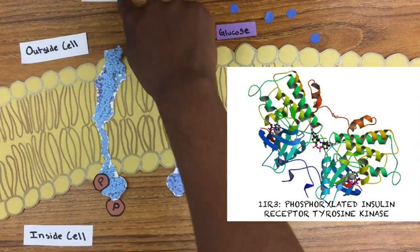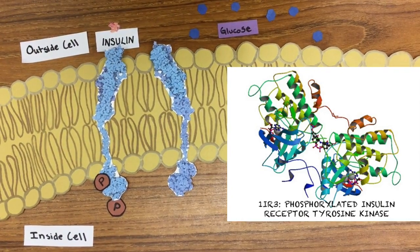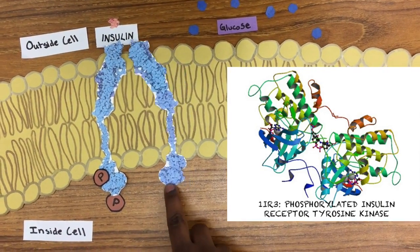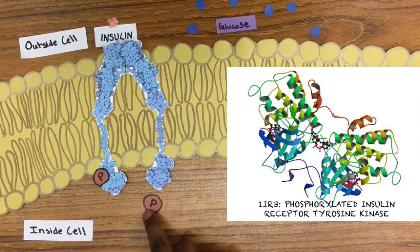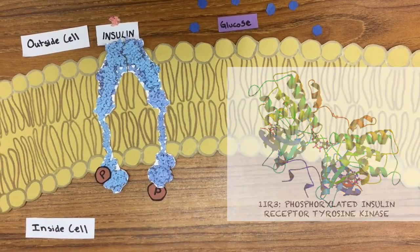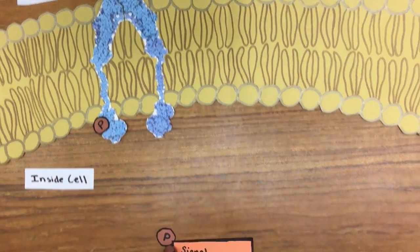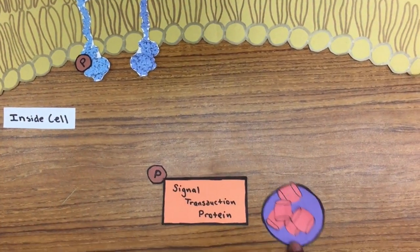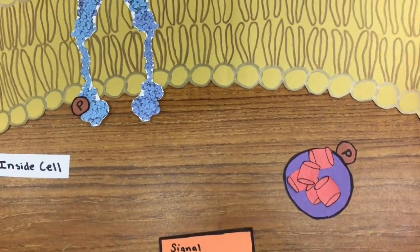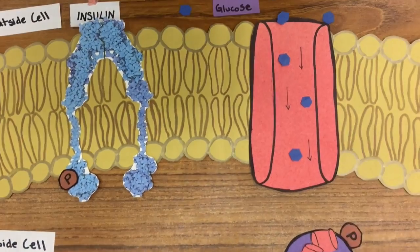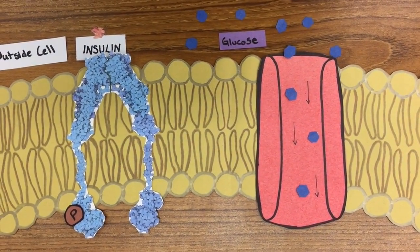The insulin signaling pathway begins when an insulin molecule binds to a tyrosine kinase insulin receptor. This activates it and causes dimerization. Then, one of the many signal transduction proteins causes a vesicle of glucose transporters to bind to the cell membrane, thus allowing glucose to move out of the bloodstream into the cell.